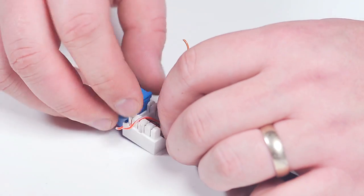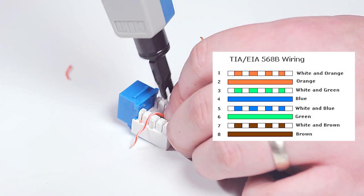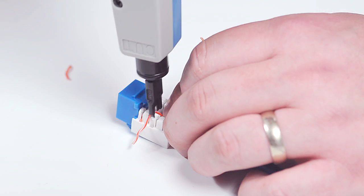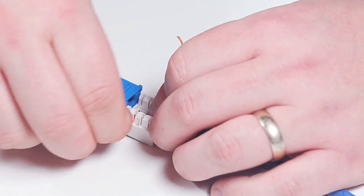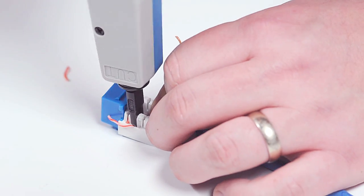For most applications, choose the 568B color code. Once you have laid out the conductors to the right color code, take your impact tool and punch down the conductors. The punch down tool pushes down the conductors into the IDC slot and also removes extra wire.